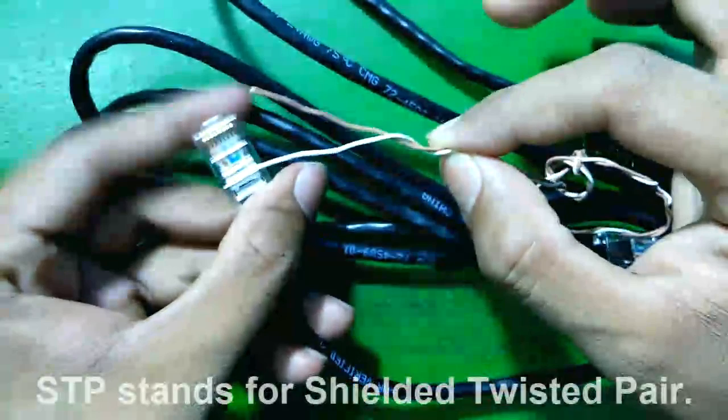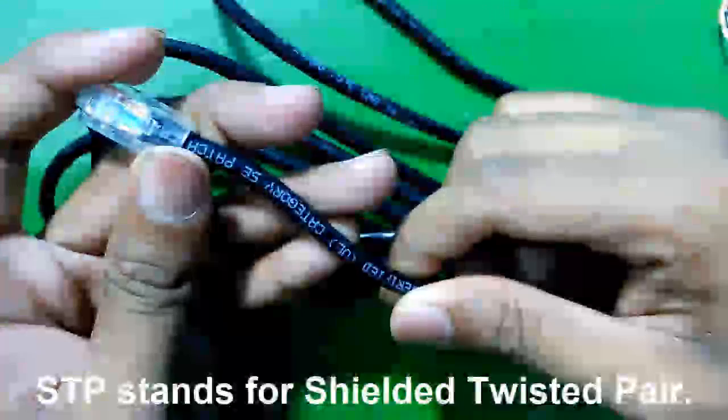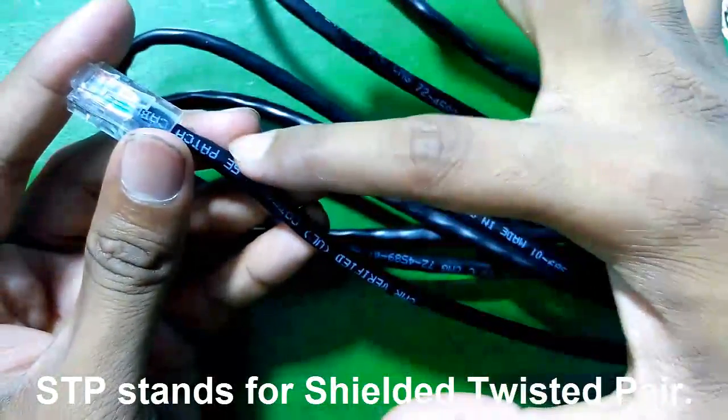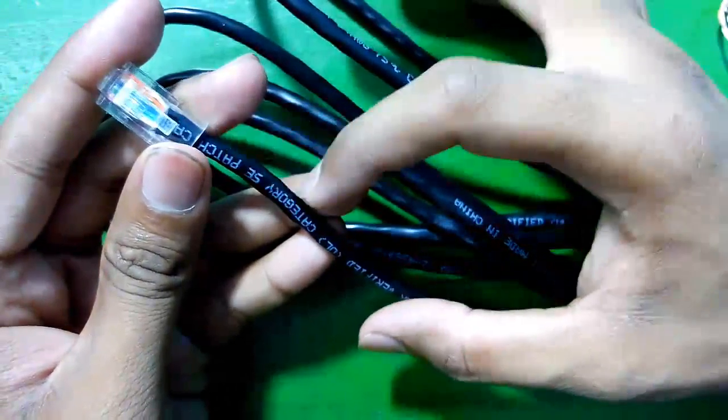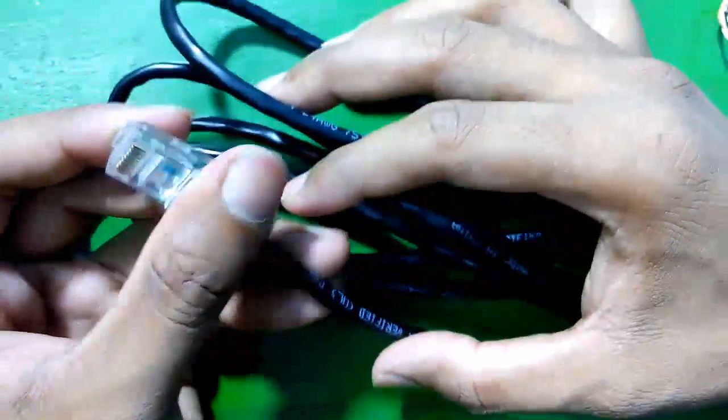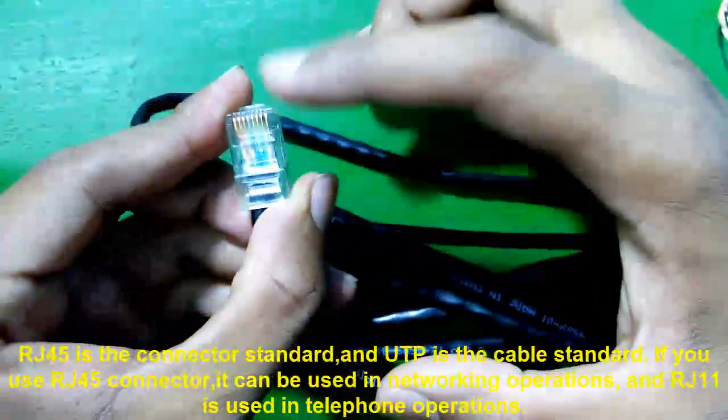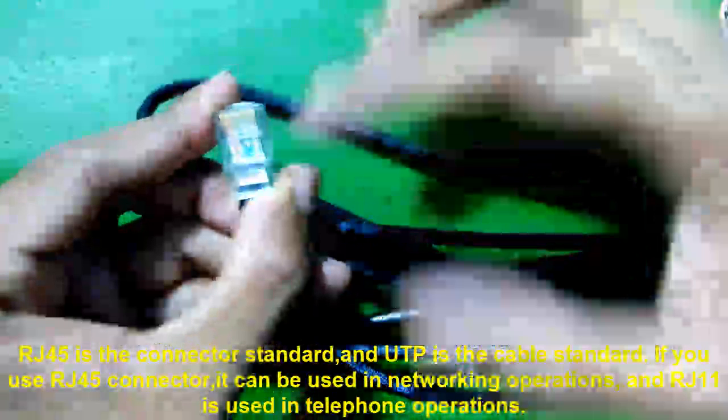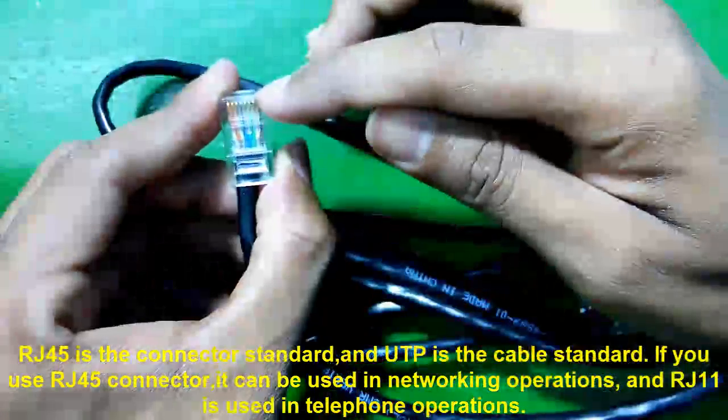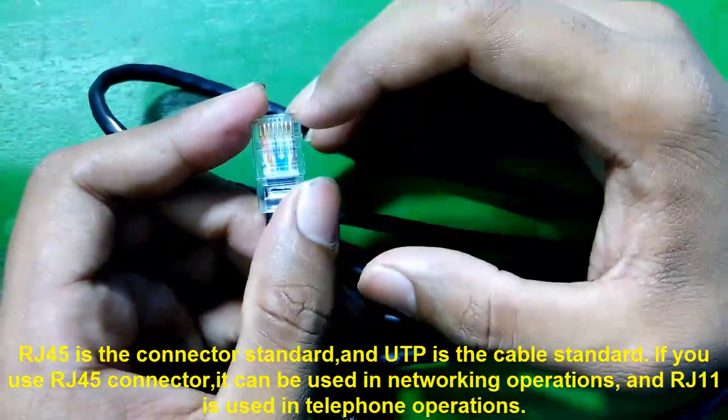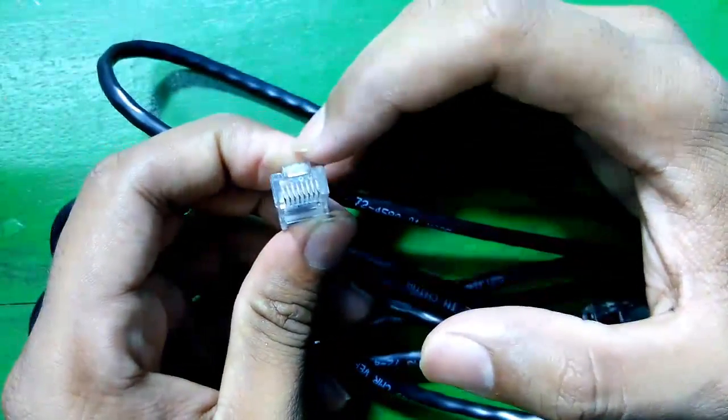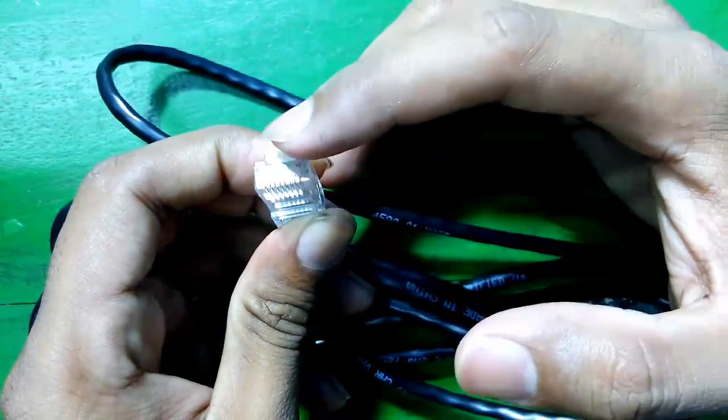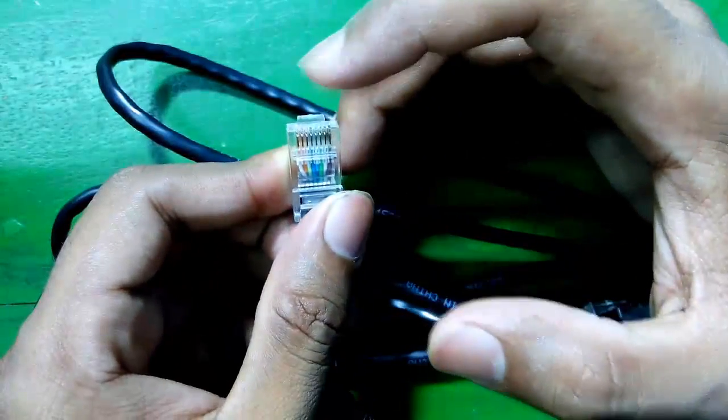So another type of cable is STP or Shielded Twisted Pair. In that, the outer jacket is made of some kind of metal. There is some kind of metal jacket to remove or to cancel the electromagnetic interference. And as you may know, this is called the RJ45 connector and this is the UTP cable. Don't confuse the cable and the connector. So if you use a RJ45 connector with an 8 pin cable, then that can be used for networking operations. And if you use a RJ11 connector, that can be used for telephone operations.